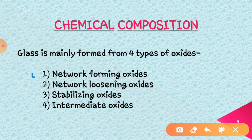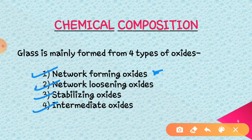The first one is network forming oxides. The second one is network loosening oxides. The third one is stabilizing oxides, and the fourth one is intermediate oxides. Network forming oxides are also termed as formers because they form the main network, or the basic network, of the glass sheet. These types of oxides are silicon dioxide, germanium dioxide, etc.